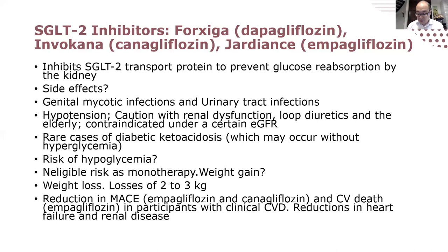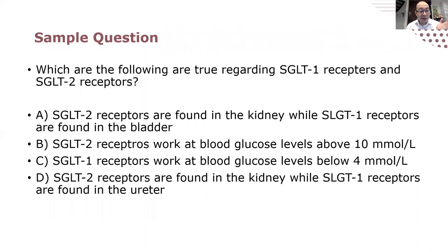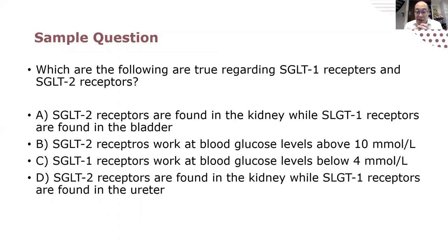Sample question on SGLT2 inhibitors: the answer is B. SGLT2s work at blood glucose levels above 10. There are SGLT1s and SGLT2s — SGLT1s work when sugars are low and SGLT2s work when sugars are high. That's why they have a low risk of hypoglycemia: when you reduce the sugar below a certain level, the SGLT2s aren't working anyway, resulting in minimal risk of hypoglycemia.